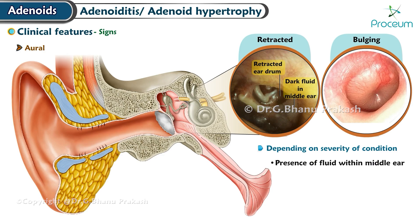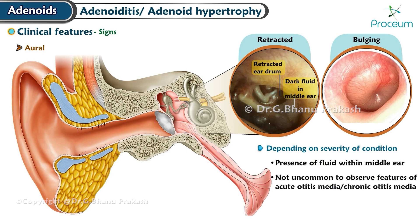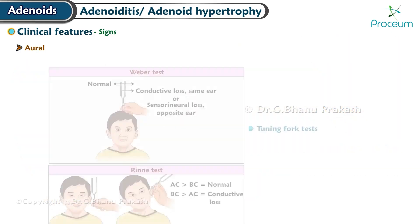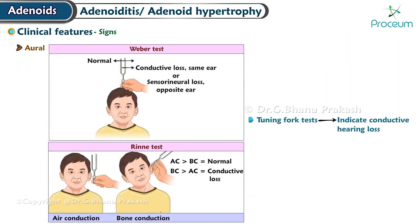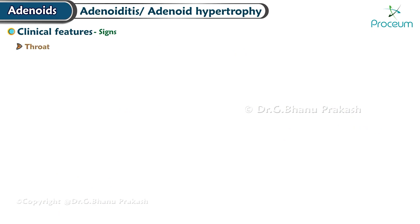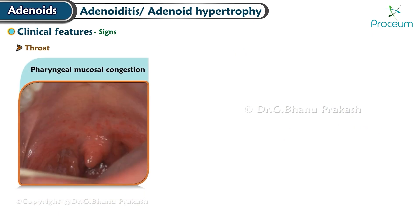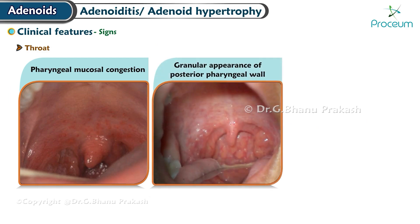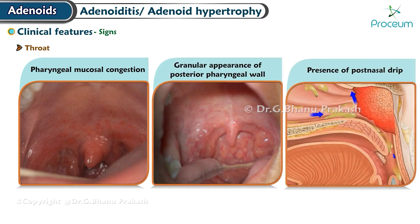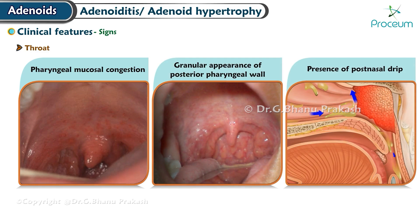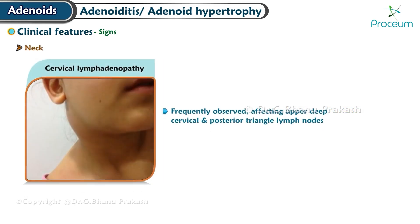Ear signs: The eardrum may appear retracted or bulging depending on the severity of the condition. A fluid level within the middle ear may be observed. Features of acute otitis media or chronic otitis media may be present. Tuning fork tests indicate conductive hearing loss. Throat signs include pharyngeal mucosal congestion, a granular appearance of the posterior pharyngeal wall, and the presence of post-nasal drip.